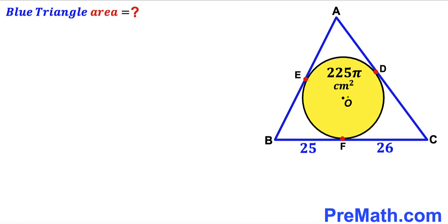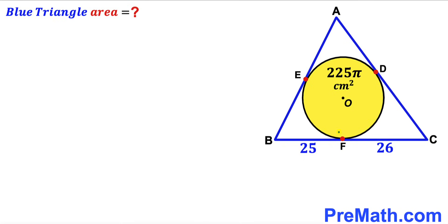Welcome to Pre-Math. In this video we have a yellow shaded circle with the center fully inscribed in a blue triangle ABC, as shown in the given diagram. The area of the yellow circle is 225π cm², segment BF is 25 cm, segment CF is 26 cm. Points D, E, and F are points of tangency. Our task is to calculate the area of the blue triangle ABC.